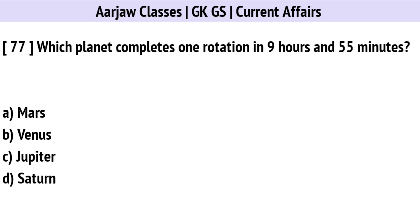Which planet completes one rotation in 9 hours and 55 minutes? Correct option is C: Jupiter.